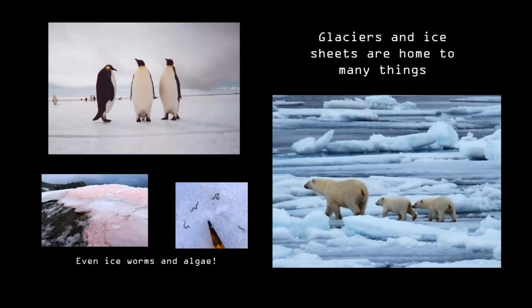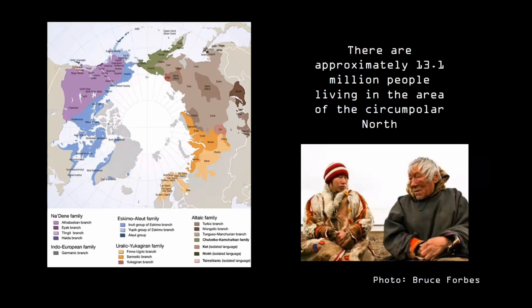Apart from major impact on climate, glaciers are home to a lot of things like cute penguins and polar bears in the Arctic, and even these creepy-looking ice worms and algae that make this really cool watermelon ice. It's a really harsh environment, but there's a lot of life there. On top of that, there are approximately 13.1 million people living in the circumpolar north, over 40 ethnic groups and many indigenous peoples, who use the ice sheets and sea ice areas for sustenance hunting and farming. So protecting the Arctic is also protecting these people.